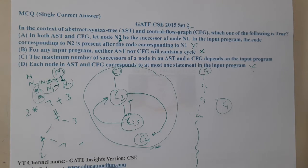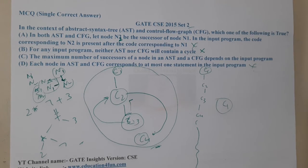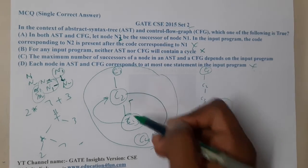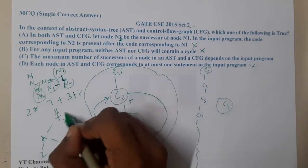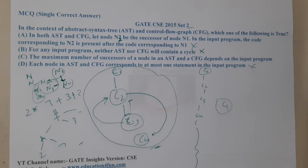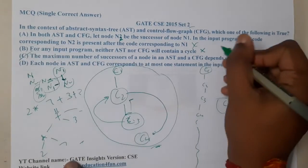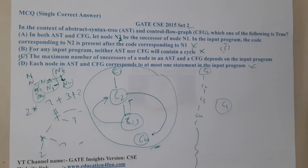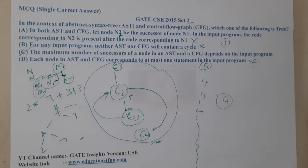The only option left is C. Option C says the maximum number of successors of a node in an AST and CFG depends on the input program. Whatever structure we have depends completely on the input — if there is one more element, it adds one more branch. So option C is the correct answer.